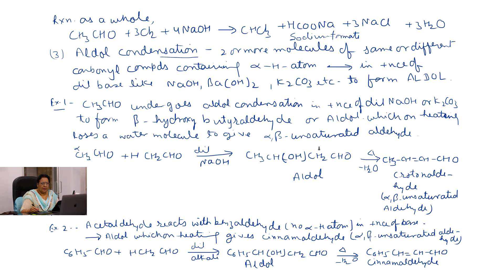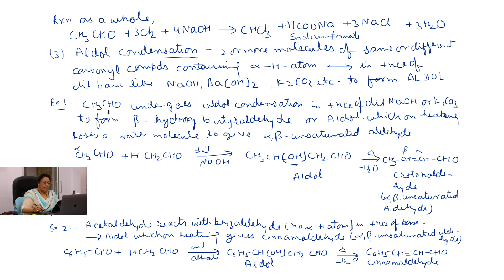In this case, beta-hydroxybutyraldehyde is obtained, which on heating loses a water molecule — this OH and H from the alpha carbon — to give alpha, beta-unsaturated aldehyde, crotonaldehyde. In acetaldehyde, the 3 hydrogen atoms on the methyl group are the alpha hydrogen atoms. This carbon is alpha and this carbon is beta.